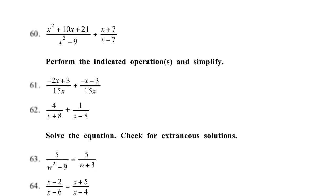Another division problem here. So I'm going to factor the top here. Two numbers multiply to 21 and add to 10: x plus 3, x plus 7 over x plus 3 times x minus 3, and then times the reciprocal x minus 7 on top, x plus 7 in the denominator, and then divide out my x plus 3s and my x plus 7s, and what's left is x minus 7 over x minus 3.